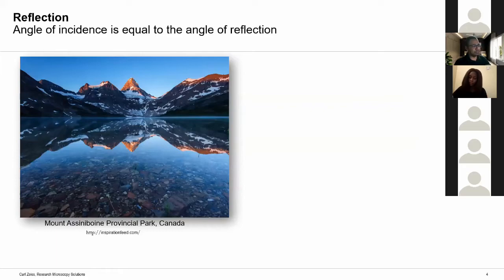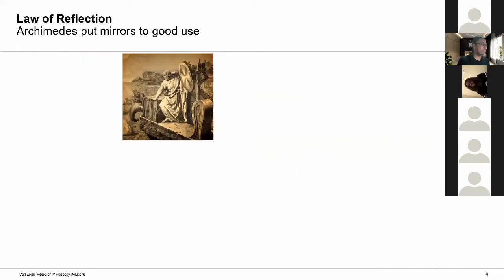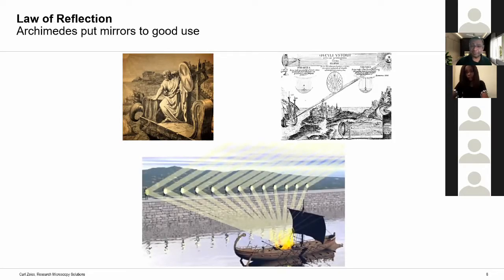Reflection happens when light interacts with a very smooth surface, as you can see here on this still lake. Reflection follows a very simple principle: angle of incidence is equal to angle of reflection. It is believed that it was Archimedes who discovered the law of reflection. He built really high quality mirrors and put them to good use. When Greece was attacked by Rome using a flotilla of naval ships, Archimedes built a giant concave mirror using a series of plane mirrors, focused sunlight, and burned the ships. We don't really know whether he managed to burn the ships, but he might have managed to confuse or frighten the enemy.